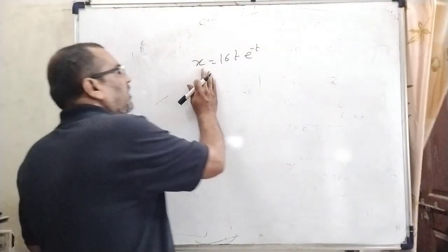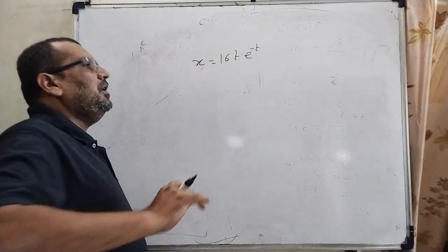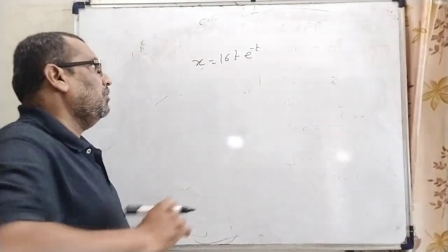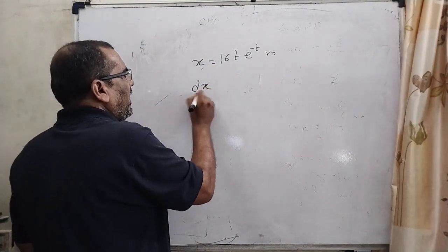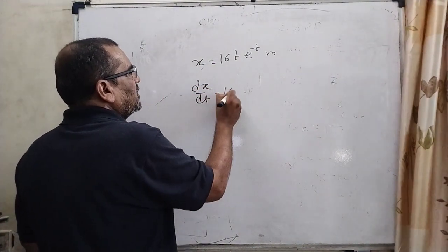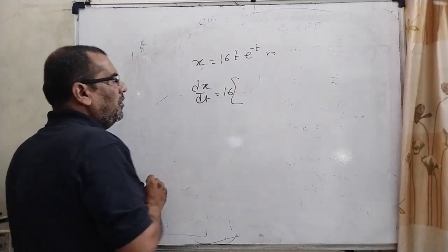Now here we have given x = 16t·e^(-t) meters. So here we differentiate with respect to t: dx/dt. 16, take common.